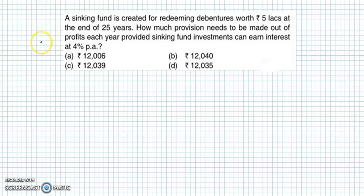Hello and welcome back. I am discussing an example from Annuity. Question is, a sinking fund is created for redeeming debentures worth Rs. 5 lakhs at the end of 25 years. How much provision needs to be made out of the profits each year provided sinking fund investments can earn interest at 4% per annum?